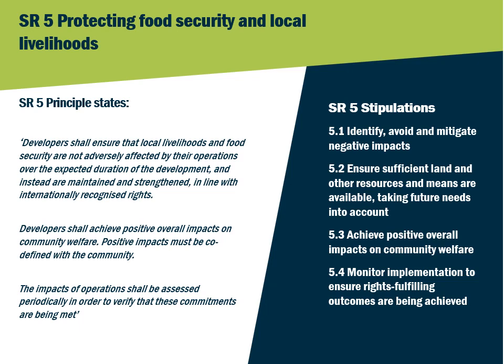The first stipulation, 5.1, states that developers must identify, avoid and mitigate any negative impacts on food security and livelihoods of communities affected by their operations. Secondly, in Stipulation 5.2, they must ensure that sufficient land and other resources are set aside, taking future needs into account and with the free, prior and informed consent, or FPIC, of communities needed for any changes to these allocations.